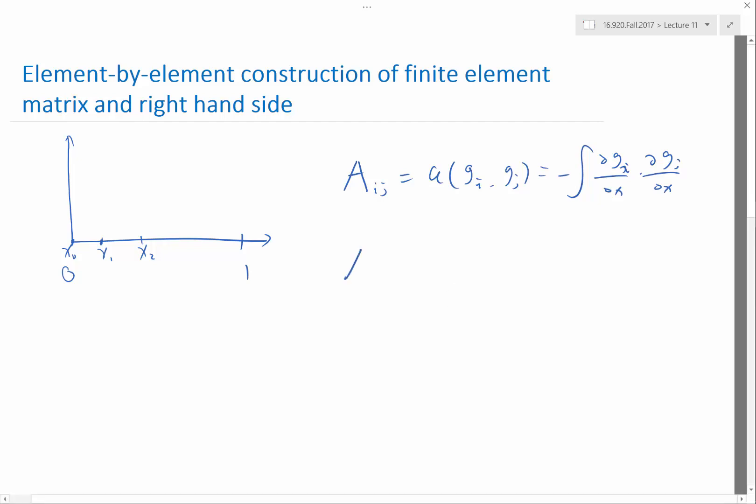Let's construct first an element matrix for element k. So this matrix is the same thing but integrated only from x_k minus 1 to x_k. So integrated only over a single element. First of all this matrix only needs to be, it's only nonzero for a small number of rows and small number of columns. These rows and columns are the rows and columns for which the corresponding basis function is nonzero in that element.